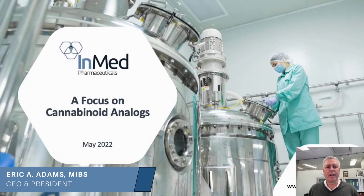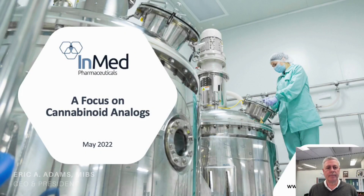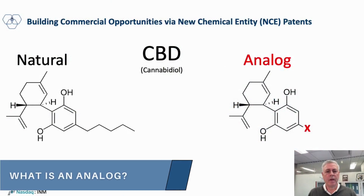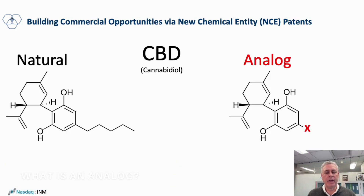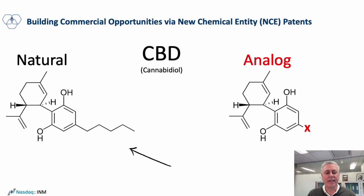Let's take a moment to focus on cannabinoid analogs. So what is an analog? An analog is created by taking one molecule and modifying it slightly in order to create a new chemical entity. In the instance of CBD, you can see on the left-hand side what its natural structure looks like — this is how it occurs in nature.